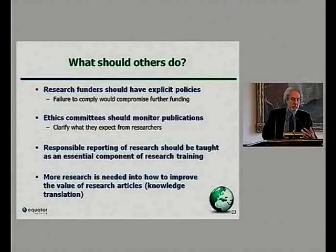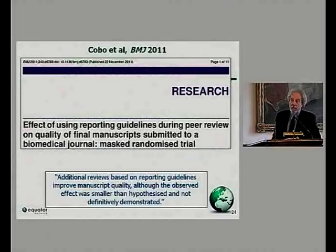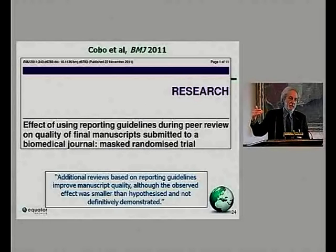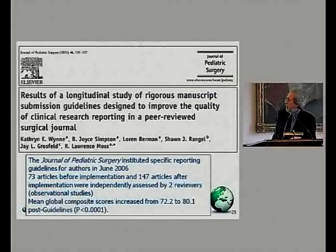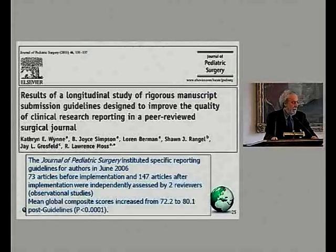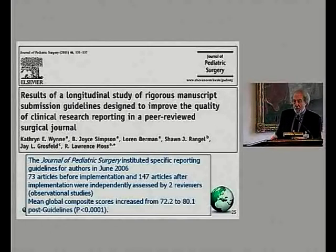Responsible reporting of research should be a mandatory part of training for researchers — people may be taught about plagiarism but not about these other really important issues. We need more research into how to improve research articles. One randomized trial published in the BMJ by Cobo in Spain looked at additional peer review specifically targeted at reporting guidelines and found a suggestion of benefit, though not definitive. A study from the Journal of Pediatric Surgery based on implementing a firm policy in 2006 showed very clear improvement in reporting in a before-and-after study. It is possible to do things better.